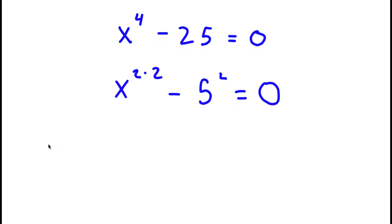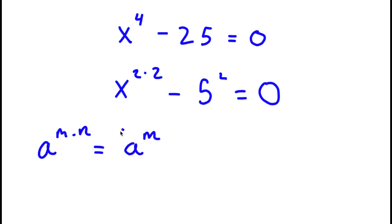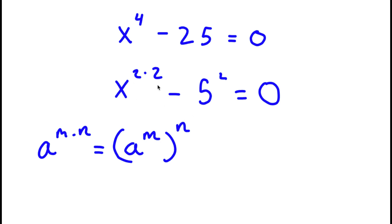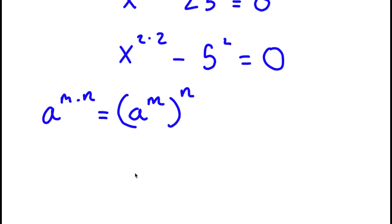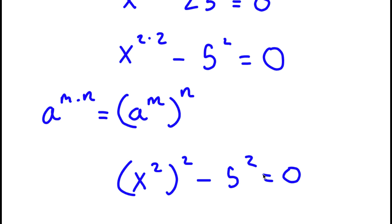If I have something in the form a to the power of m times n, this is equal to a to the power of m to the power of n. So in this case, x to the power of 2 times 2, I can rewrite as x to the power of 2 to the power of 2. Now I have this minus 5 to the power of 2 is equal to 0.